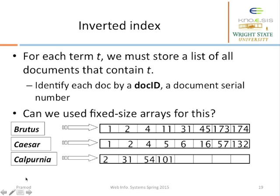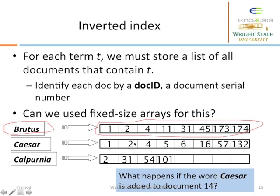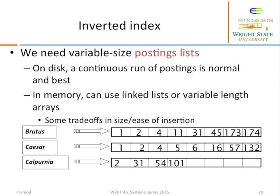Let's consider what kind of data structure we would use to store the list of documents containing a particular term. If we use fixed-size arrays and a word like Caesar is added to document 14, the doc ID 14 has to be added to the list — so fixed-length arrays are not suitable. A variable-length postings list is much more suitable, and it can be implemented using linked lists or variable-length arrays. The choice depends on the tradeoff between space and ease of insertion.